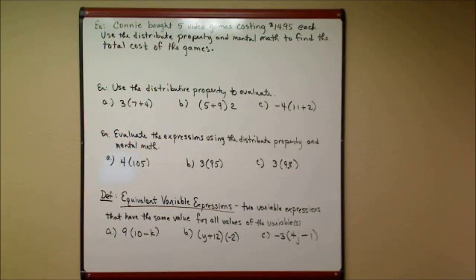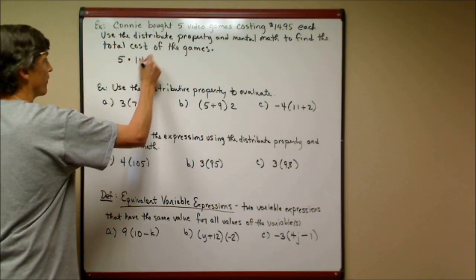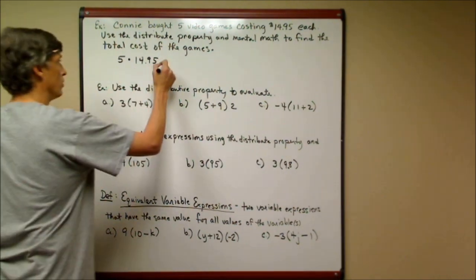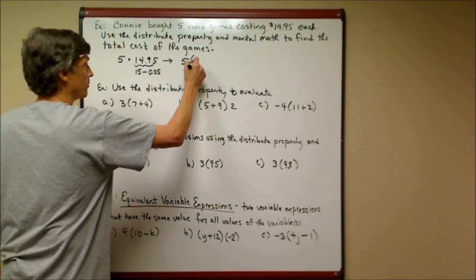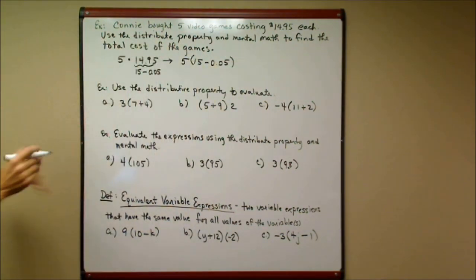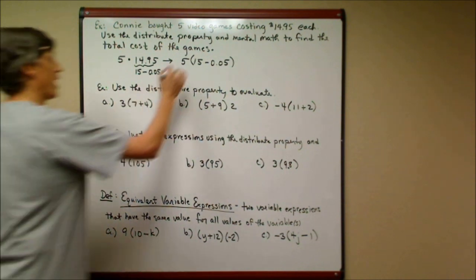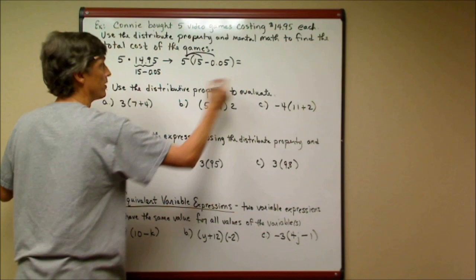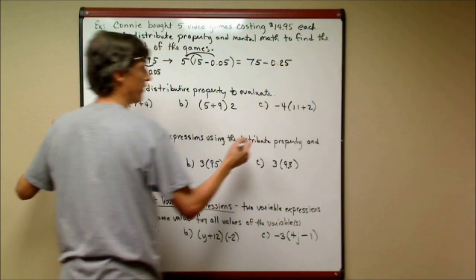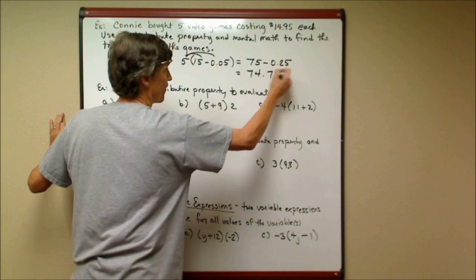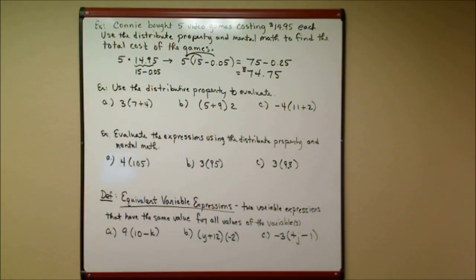Second application: Connie bought five video games costing $14.95 each. Use the distributive property and mental math to find the total cost. Since $14.95 is practically $15, I think of it as $15 minus $0.05, and write this as five times (15 − 0.05). Distributing: five times fifteen is seventy-five, minus five times $0.05 which is $0.25. So the total cost is $74.75.